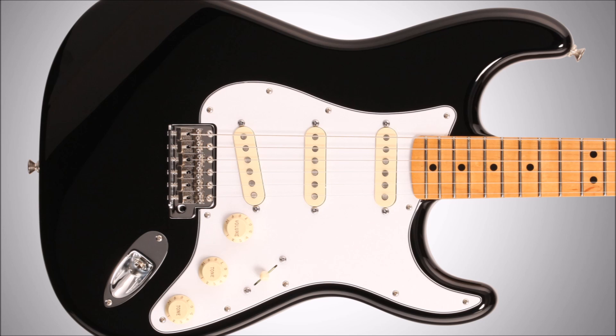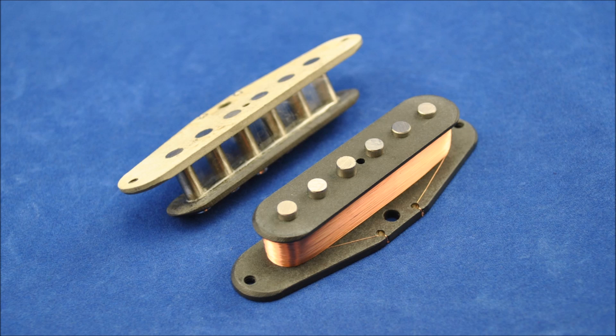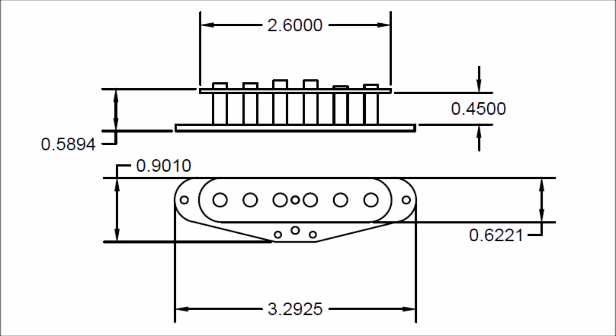This is largely determined by how the magnetic field propagates over the strings and the coil. Different types of magnets, coil windings, and pickup metal cores, which are the pole pieces or flat bars or rails, produce different tonal characteristics.